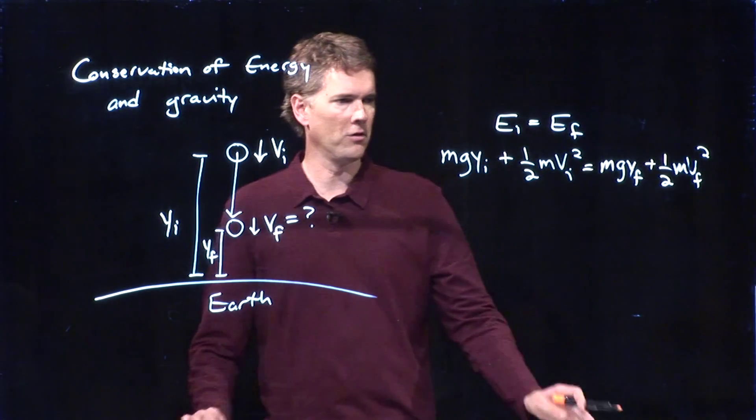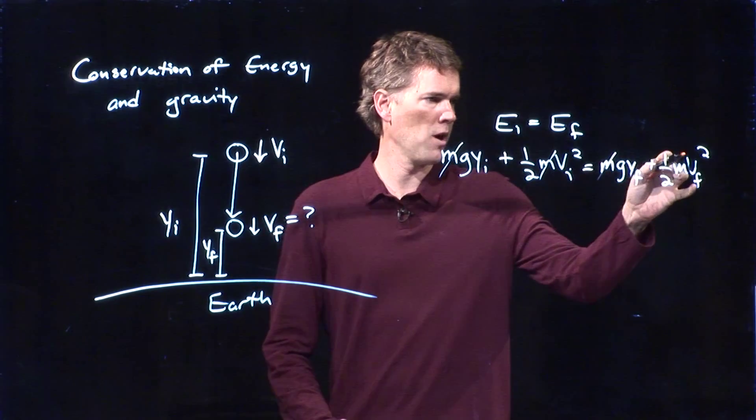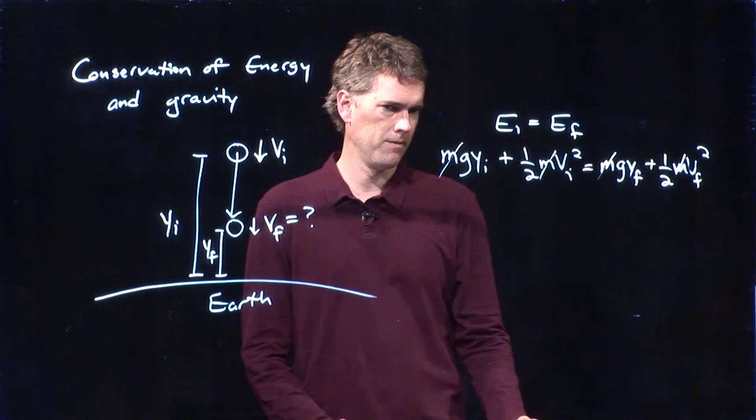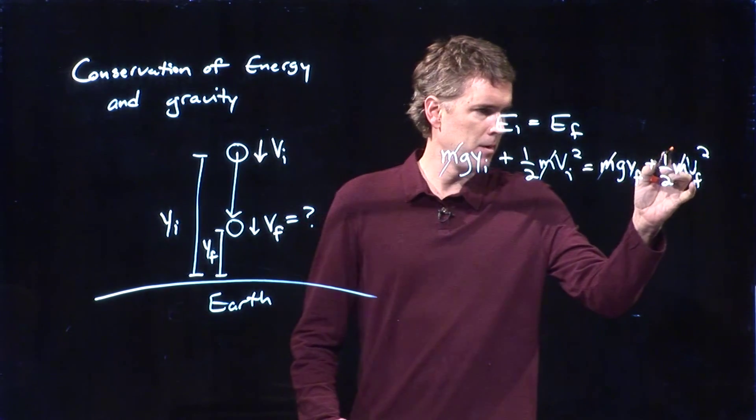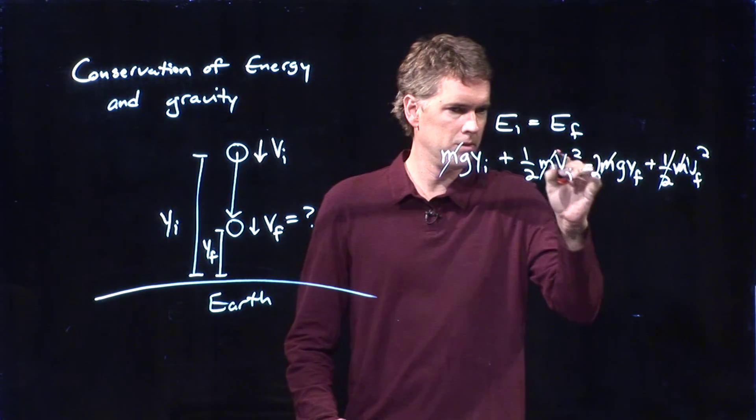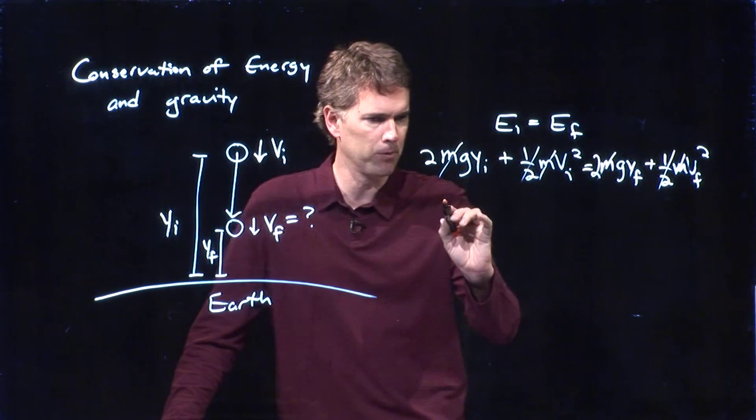And now let's see if we can put this together and simplify it a little bit. The first thing you notice is there is an m everywhere. So I can cross out the m everywhere. The other thing you notice is I've got a half and I've got a half. If I multiply by 2, I can do that.